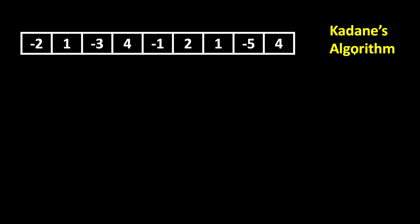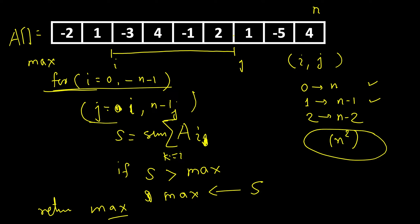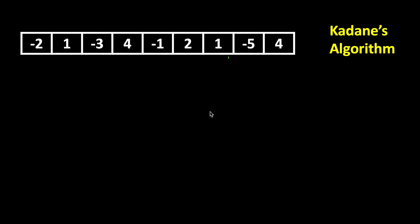Now let's look at an improved solution. This idea was proposed by Kadane's algorithm. The main idea is that any subarray has to end at one of the indices. Moving from left to right, we keep track of two values: the best sum we have got so far overall, and the best subarray ending at the current index k.